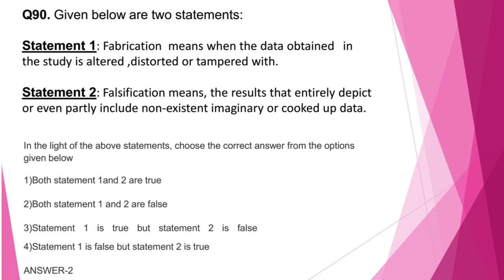Question number 90. Statement 1: Fabrication means when the data obtained in the study is altered, distorted or tampered with — this is wrong, because fabrication means making up data or results, i.e., creation of non-existent data. Statement 2: Falsification means the results entirely or partly include non-existent, imaginary or cooked-up data — this is also wrong, because falsification actually means manipulating research materials. The definitions have been interchanged, so both statements are wrong. The correct answer is option 2.